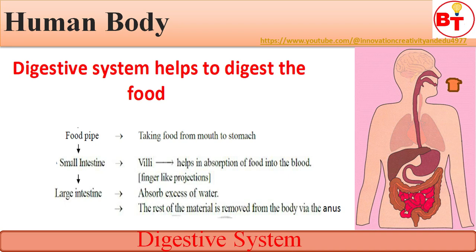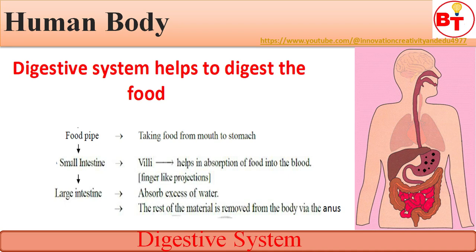The small intestine helps to absorb the food into the blood — this is where food gets absorbed and goes into the blood. On the small intestine there are finger-like structures called villi, and through these villi the absorption of food takes place. After the small intestine, the next part is the large intestine.